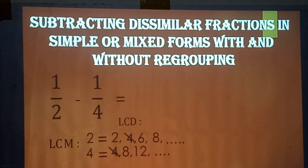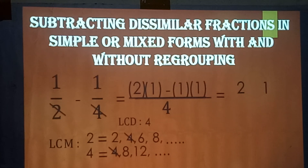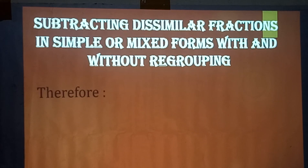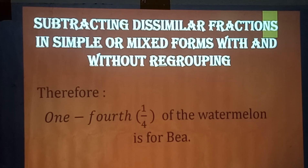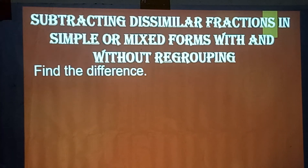The LCD is 4. So: 4 divided by 2 equals 2, times 1; minus 4 divided by 4 equals 1, times 1 equals 1. Two minus one over four equals one-fourth. Therefore, one-fourth of the watermelon is for Bea.